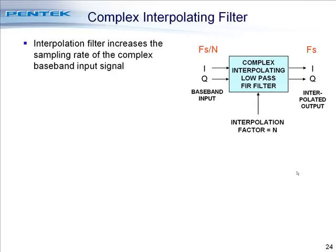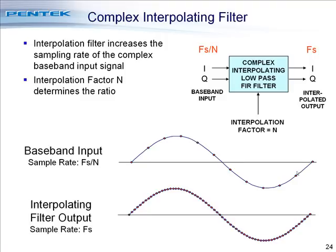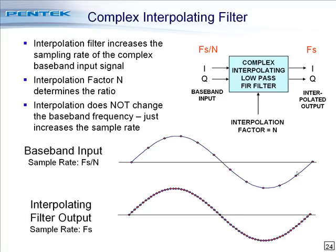The interpolation filter increases the sampling rate of the complex baseband input signal to match the required rate for the mixer. The interpolation factor N determines the ratio: complex samples come in at FS divided by N and leave at FS. The input waveform at the lower sampling rate FS over N is the same waveform at the output but sampled at the much higher rate FS — the same sine wave, just with many more samples throughout each cycle. Interpolation does not change the baseband frequency; it just increases the sample rate.